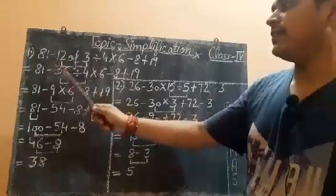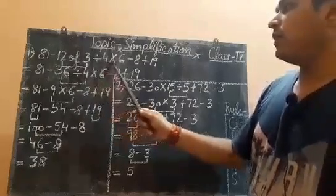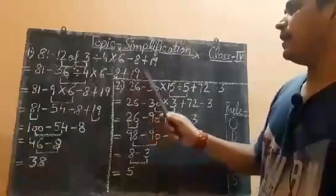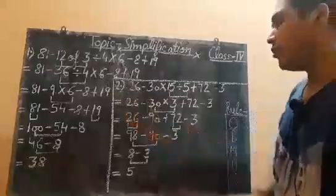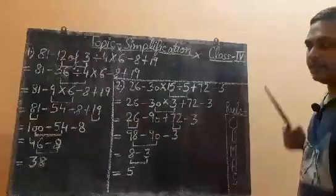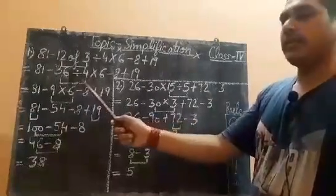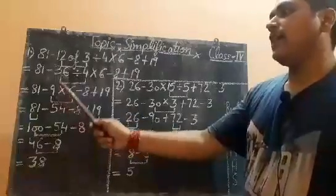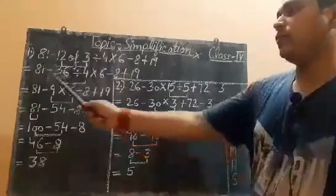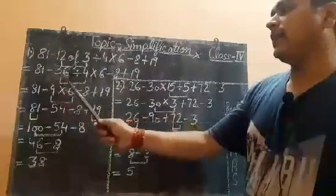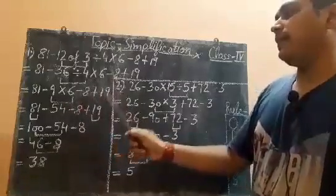So the expression becomes: 81 minus 36 divided by 4, multiply by 6, minus 8 plus 19. Now after solving the 'of' part, what you have to solve next is division. The division is 36 divided by 4, which will be 9, and the rest of the numbers are copied down as they are. So it becomes: 81 minus 9 multiply by 6 minus 8 plus 19.